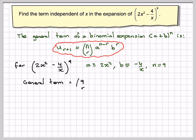So now putting this information into this formula, we get the general term is equal to 9cr, and r is what we need to find, 2x squared to the power of 9 minus r, and brackets minus 4 over x to the power of r.